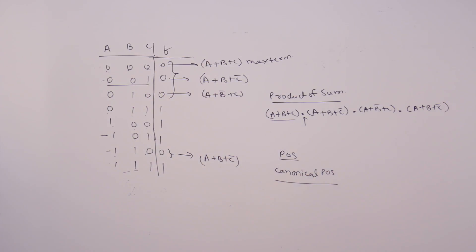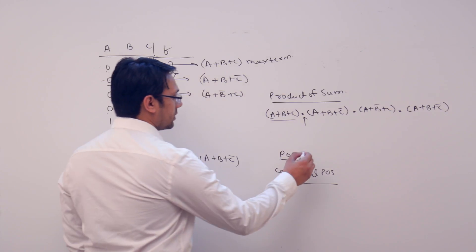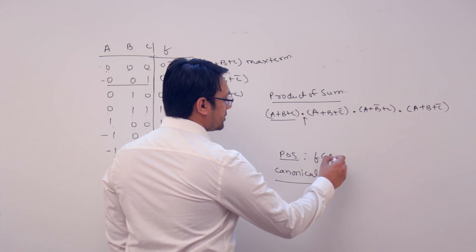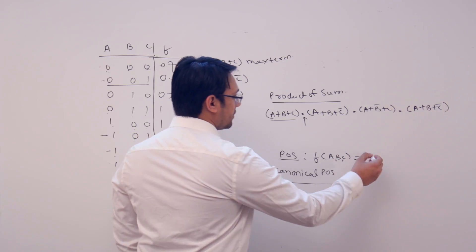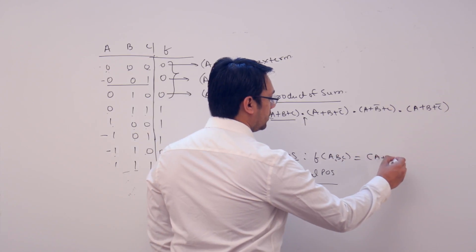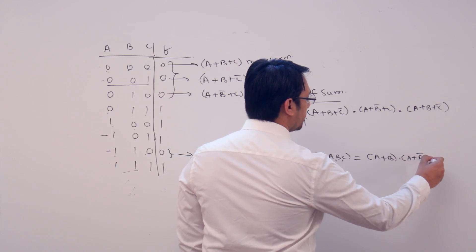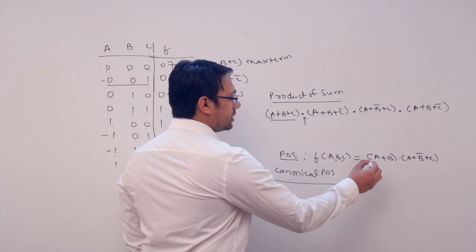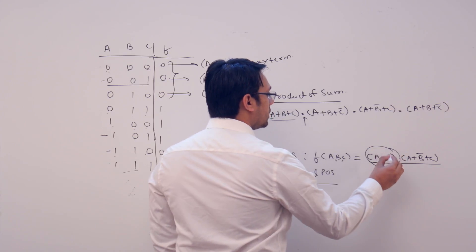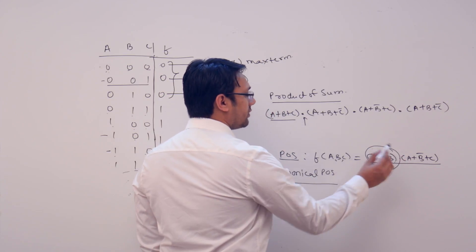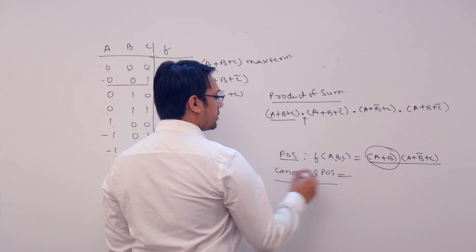What is a canonical product of sum? In case of product of sum, if you have a function which is representing a, b, c, then we can represent a function like this: a plus b, dot, a plus b complement plus c. Here in this case, in every product term — in this product term — we don't have the variable c.